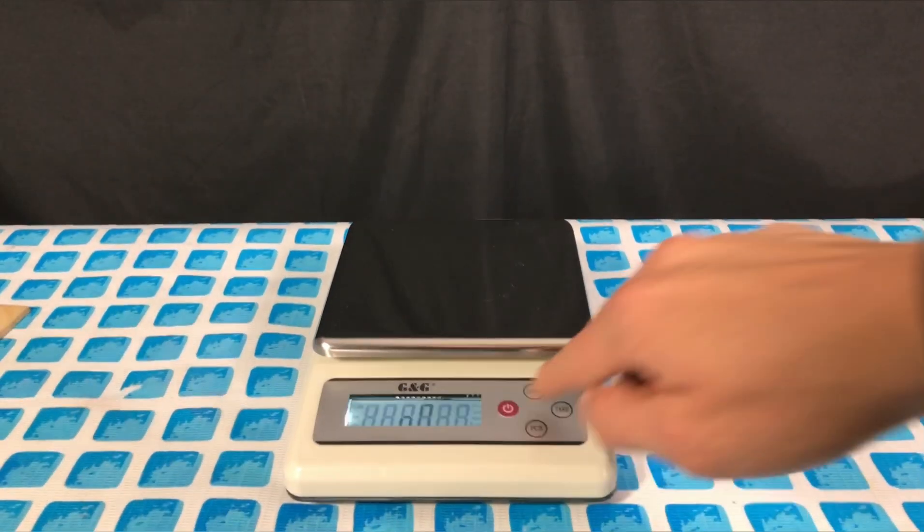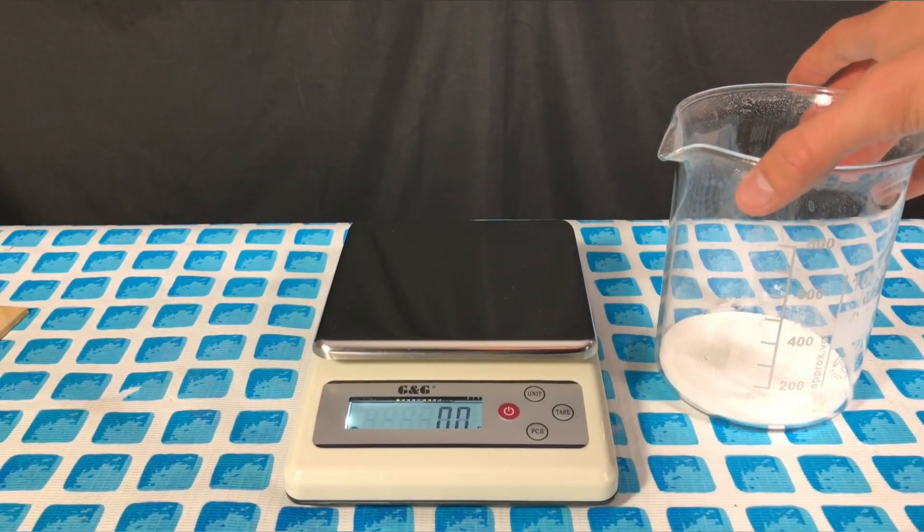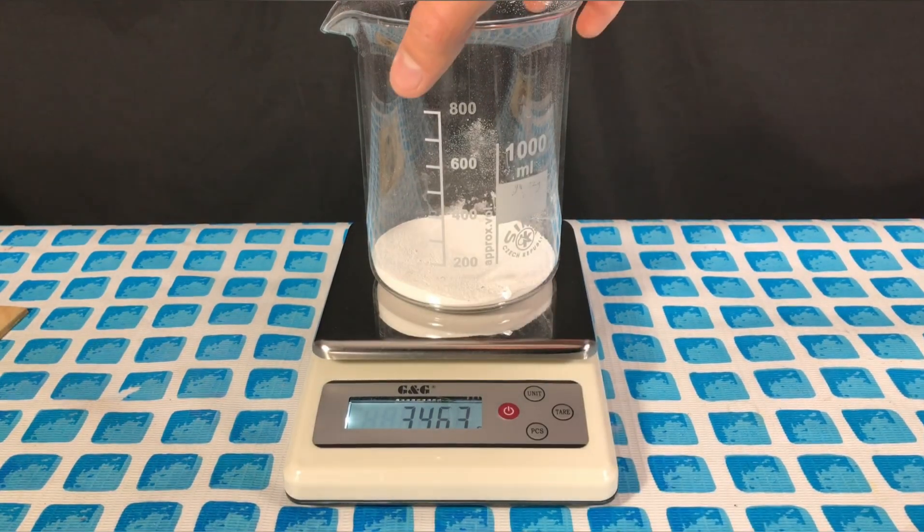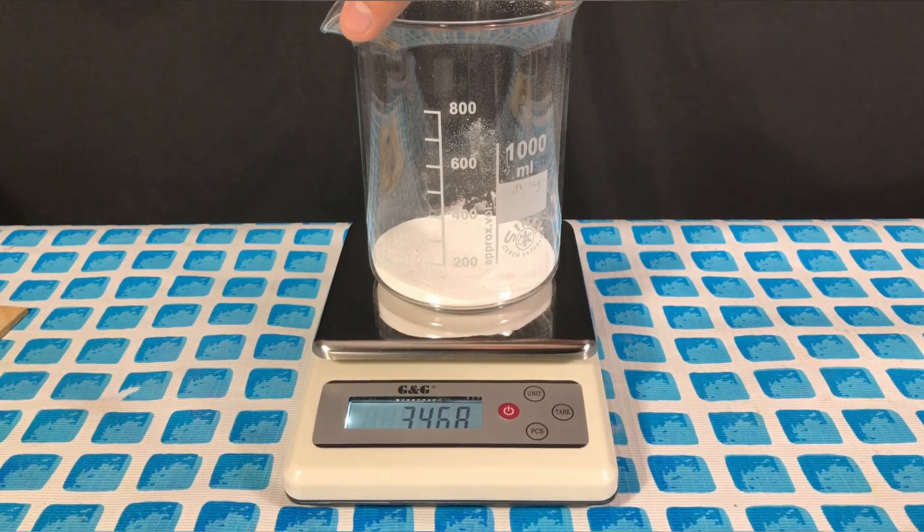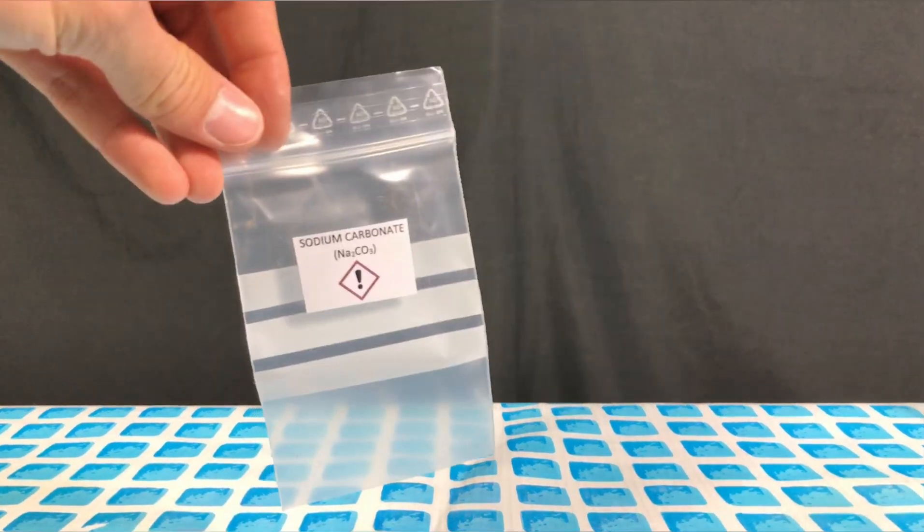To determine the yield the beaker again was put on top of a scale and weighed out. By subtracting the weight of the beaker from the total weight we were left with 53.1 grams. This represents a yield of 100.3% which means there is still some unreacted sodium bicarbonate or impurities. But these should be negligible. Near 100% yields can be expected.